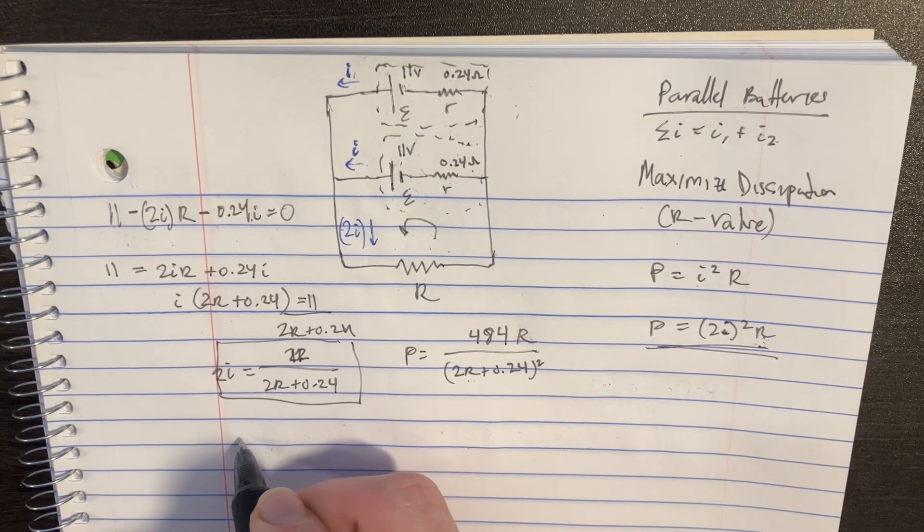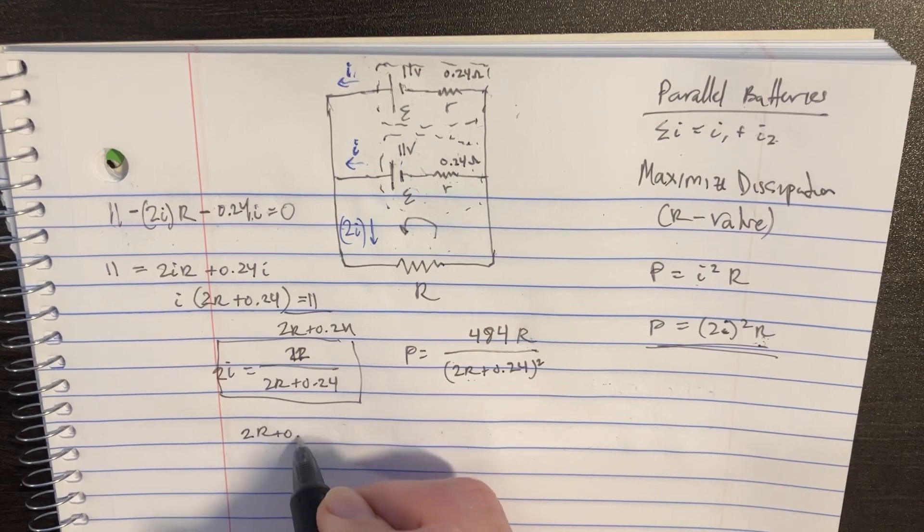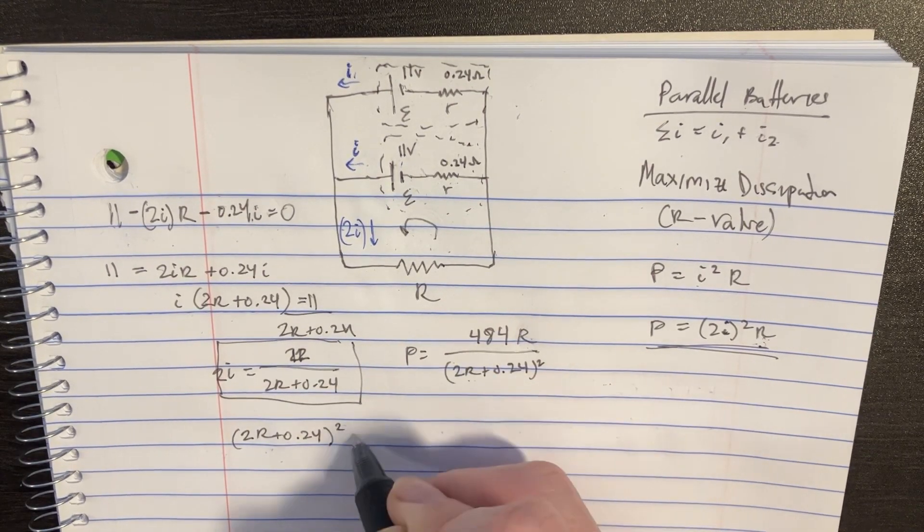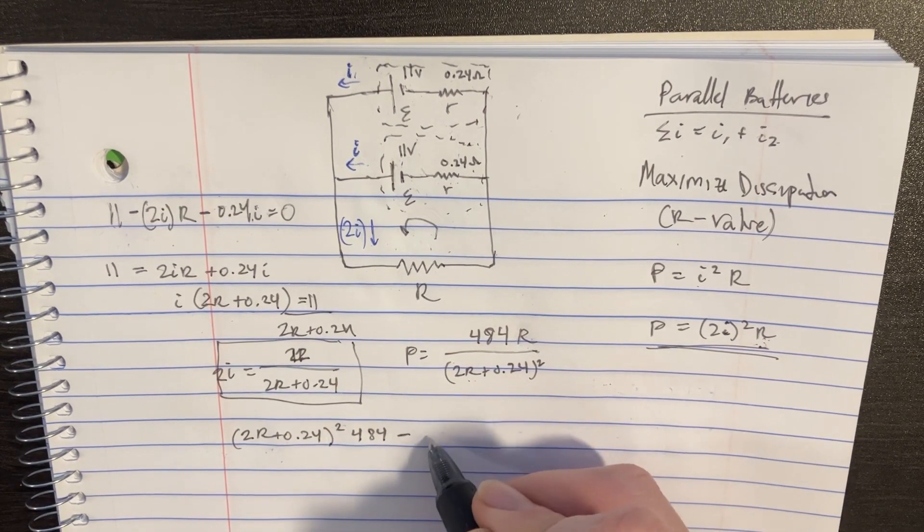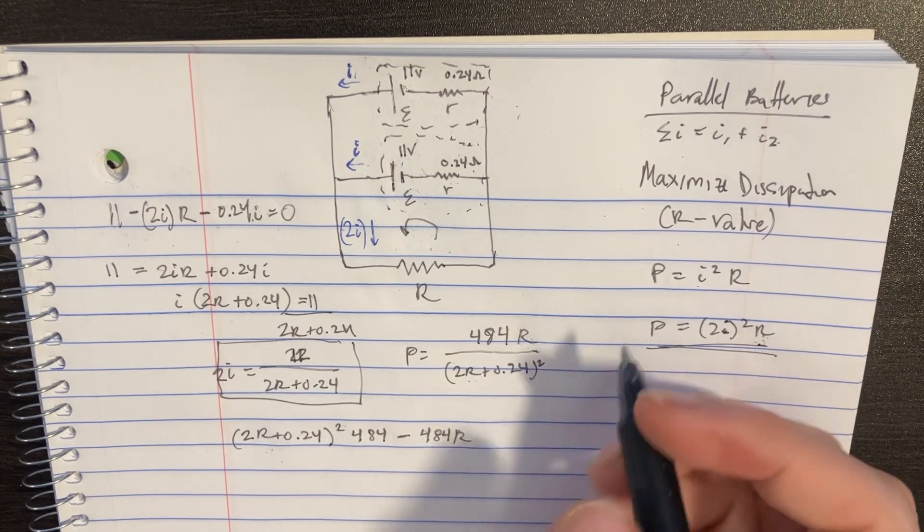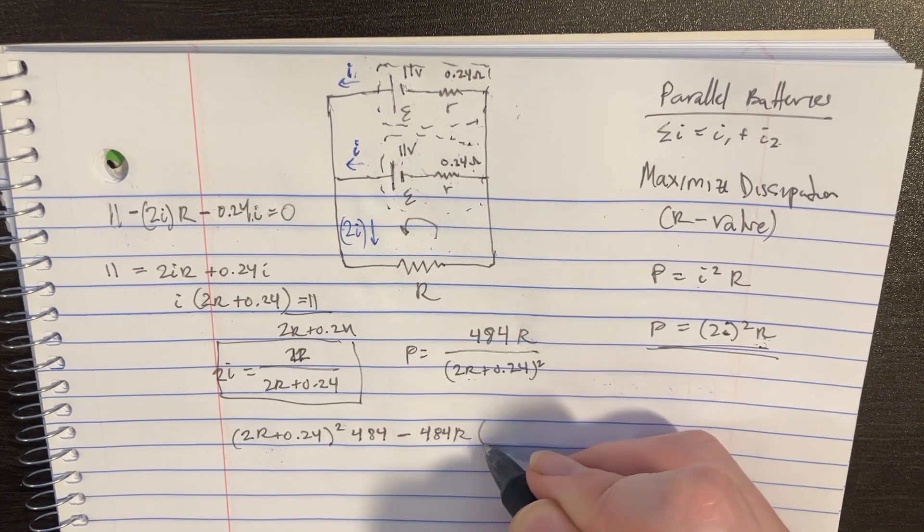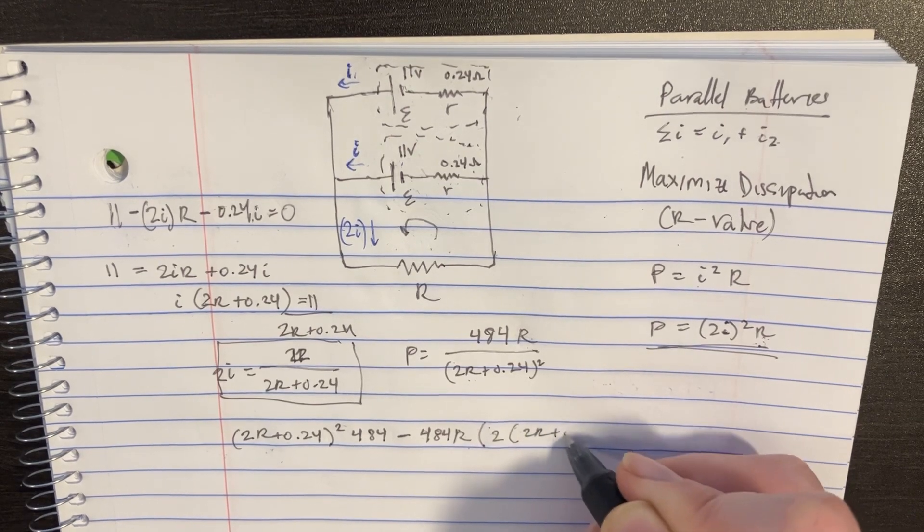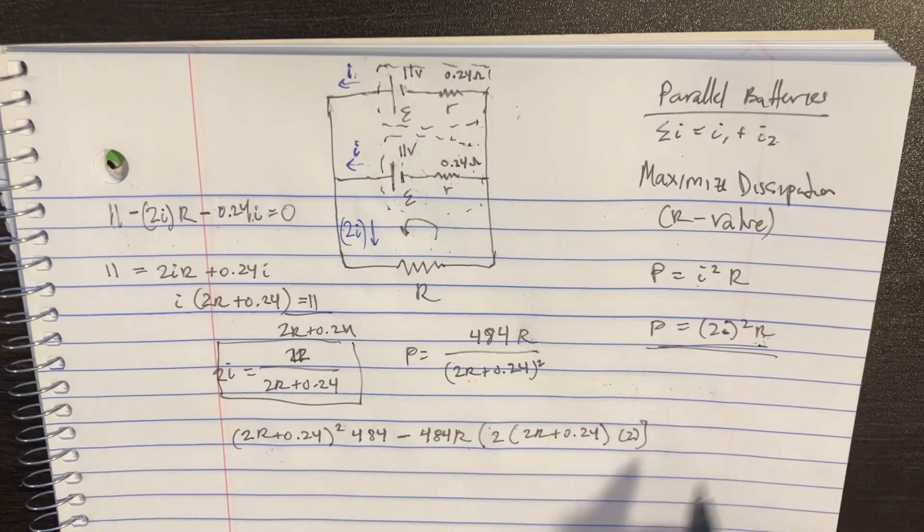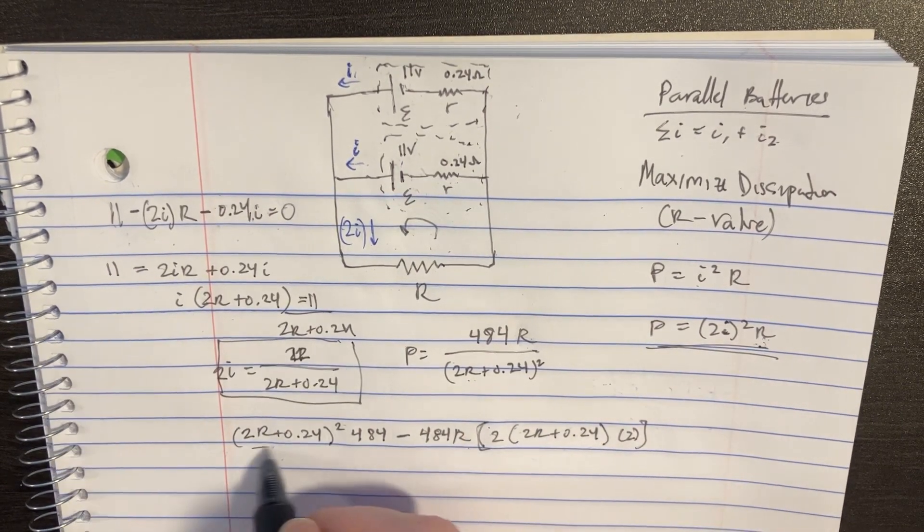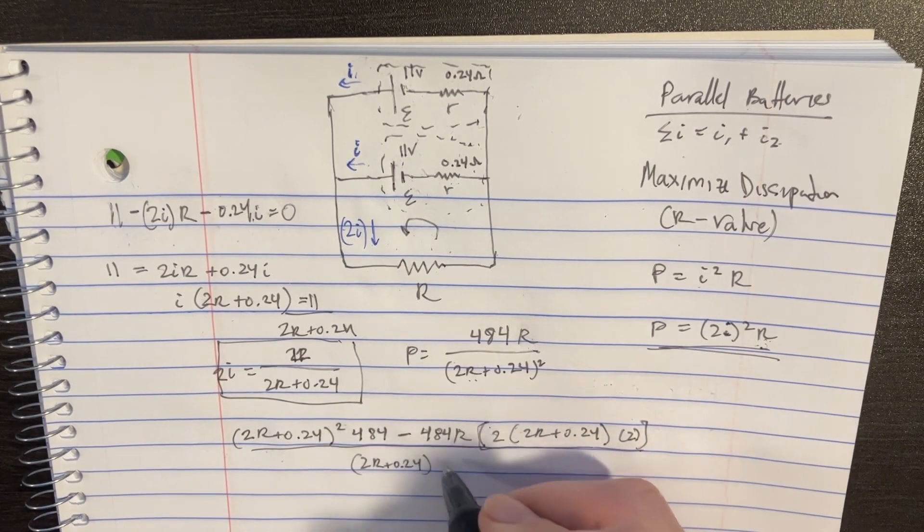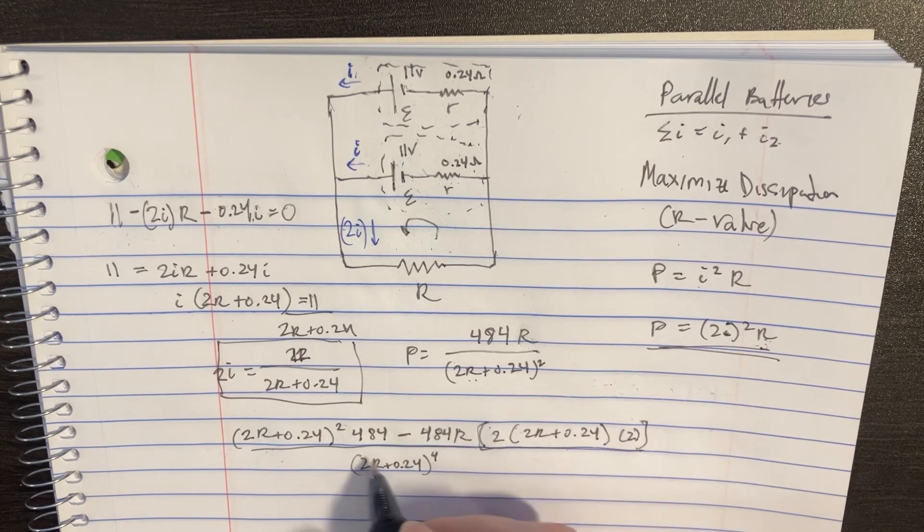And then times 484 minus 484. All right, and then d low, it's going to be a 2 times 2r plus 0.24, and then another 2 over here. All right, we're going to divide that by the bottom squared, is 2r plus 0.24 to the fourth power, but that doesn't really matter. We just set this thing equal to zero, which means that that's equal to that.